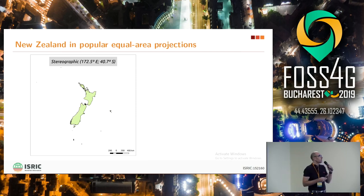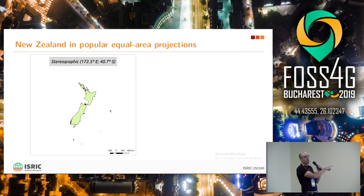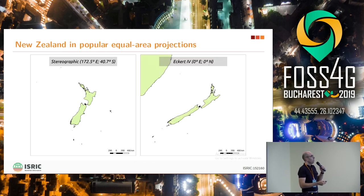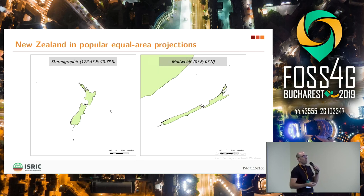Let me show you why. This is New Zealand in the stereographic projection — meaning that if you were on board the International Space Station going over New Zealand looking down, you would see something very similar to this. If you plot this with an equal area projection — in this case Eckert 4, which is a somewhat popular projection — you see that things start going a little bit wrong. And if we go to an even older projection, like the Mollweide, well, it doesn't really get better.